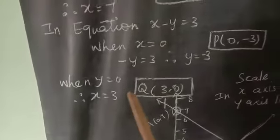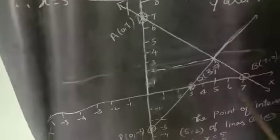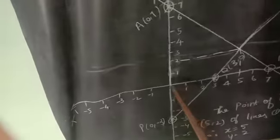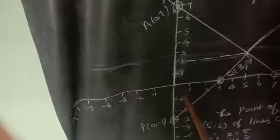Now we use the graph sheet. We draw the perpendicular lines. y, x, x dash, y, y dash. The two perpendicular lines intersect at origin 0,0.